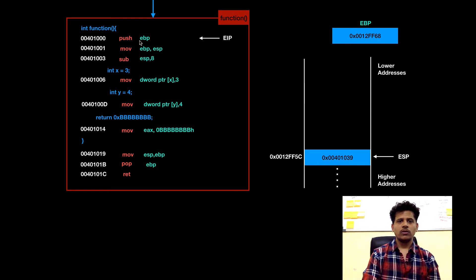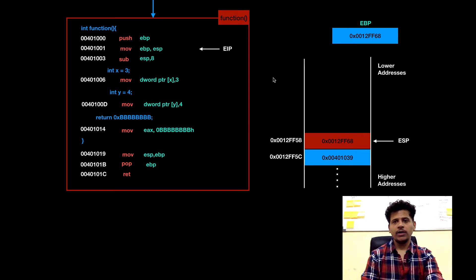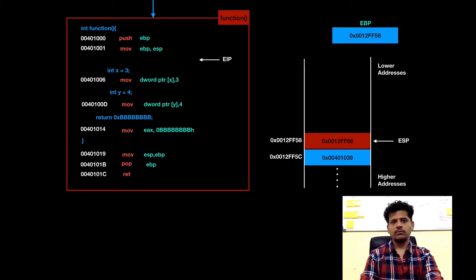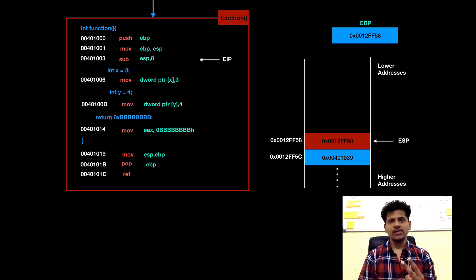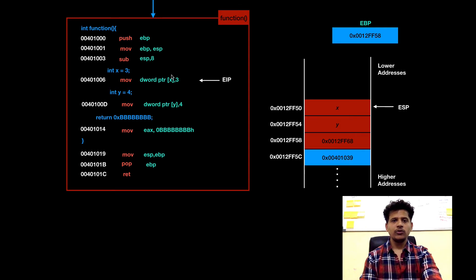We are in function. First instruction is push ebp — that means we will push the stack frame pointer of main onto the stack. Next is move esp into the ebp to start the function stack frame onto the stack. Next is subtract esp by 8 because we are defining 2 variables and for that we have to allocate some space onto the stack. We have allocated some space. In C, we are defining integer x equals 3, so the assembly equivalent is moving 3 into the space allocated by the compiler.